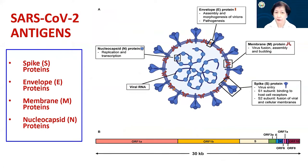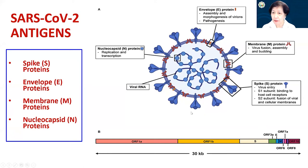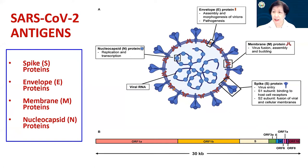Back to our virus: it is very important to understand the structure of the virus. There are four main antigens or structural proteins. We start with the spike, which is on the external part of the virus and is used for virus entry. It has two subunits: the first subunit binds to the host cell receptor, the ACE2 receptor, and the second subunit S2 is for the fusion of the viral and cellular membranes.